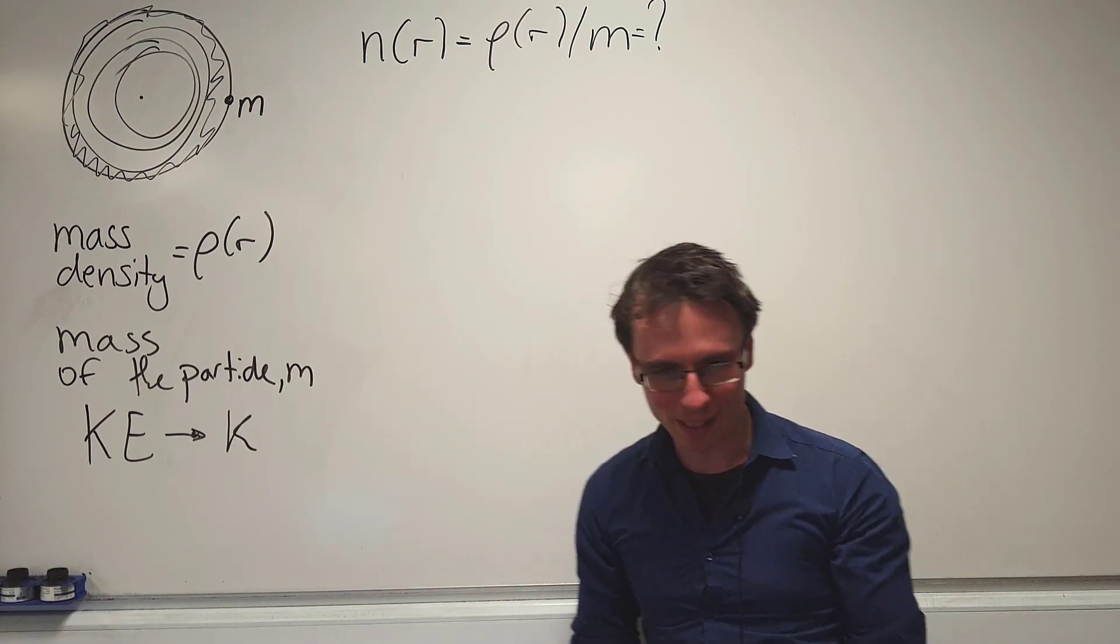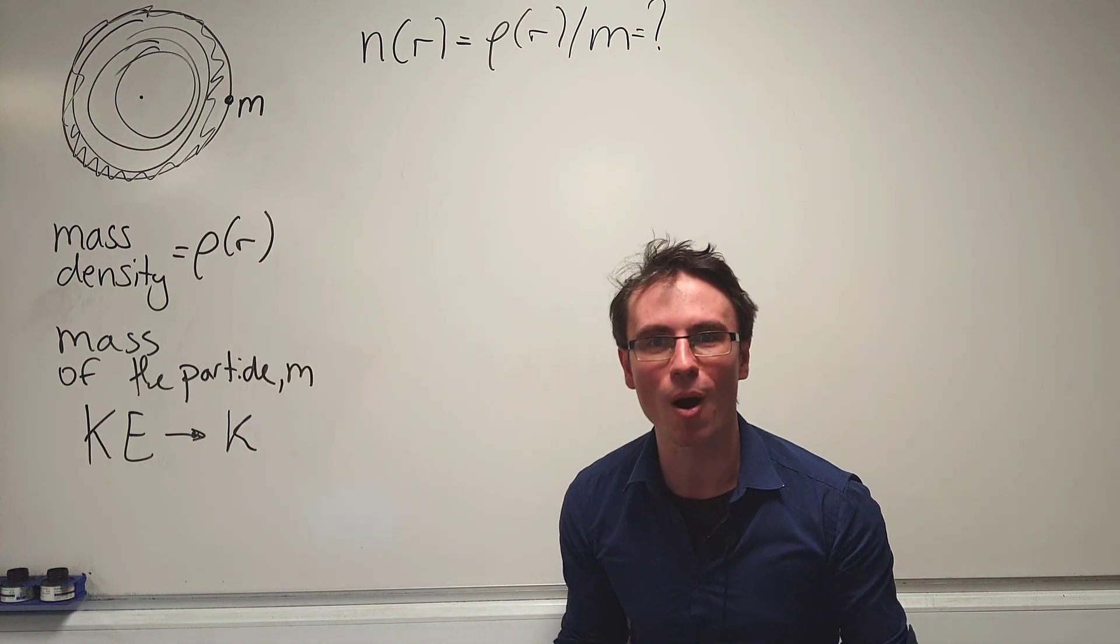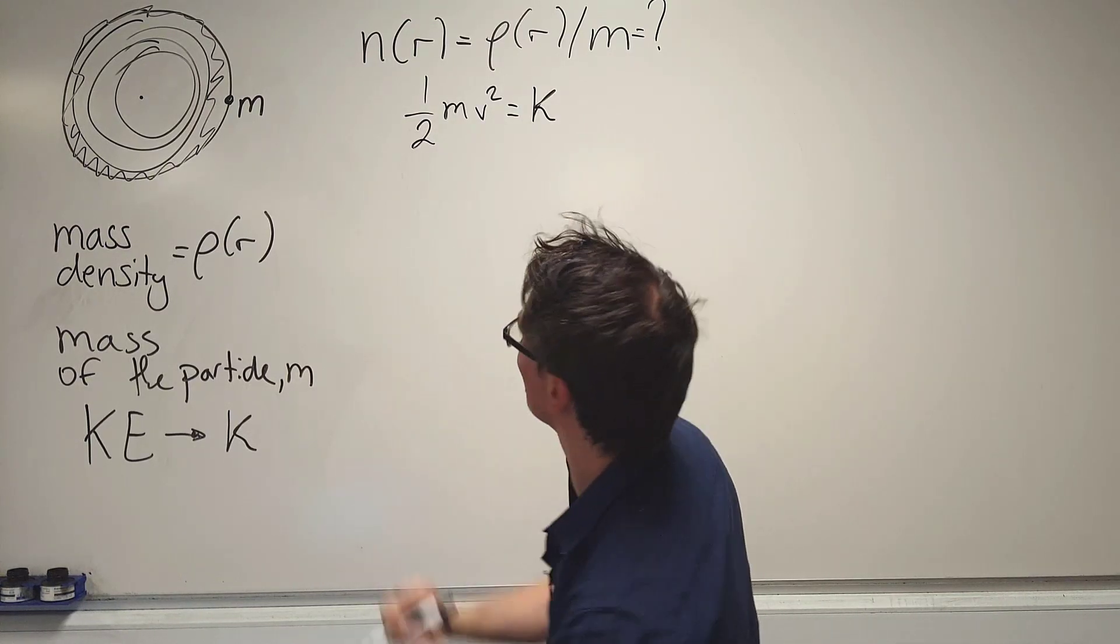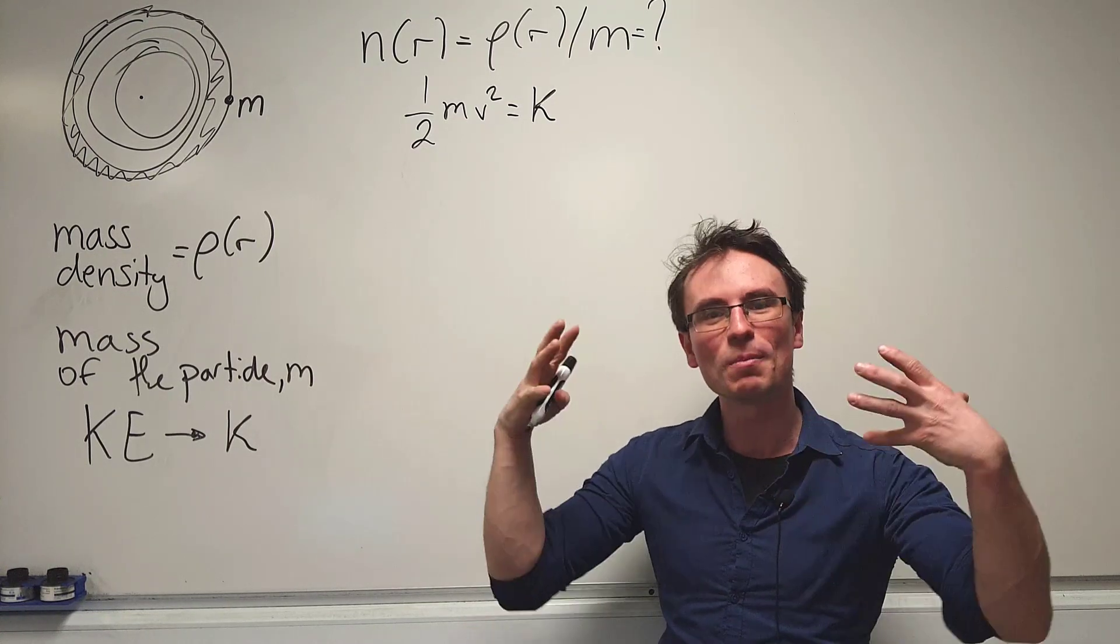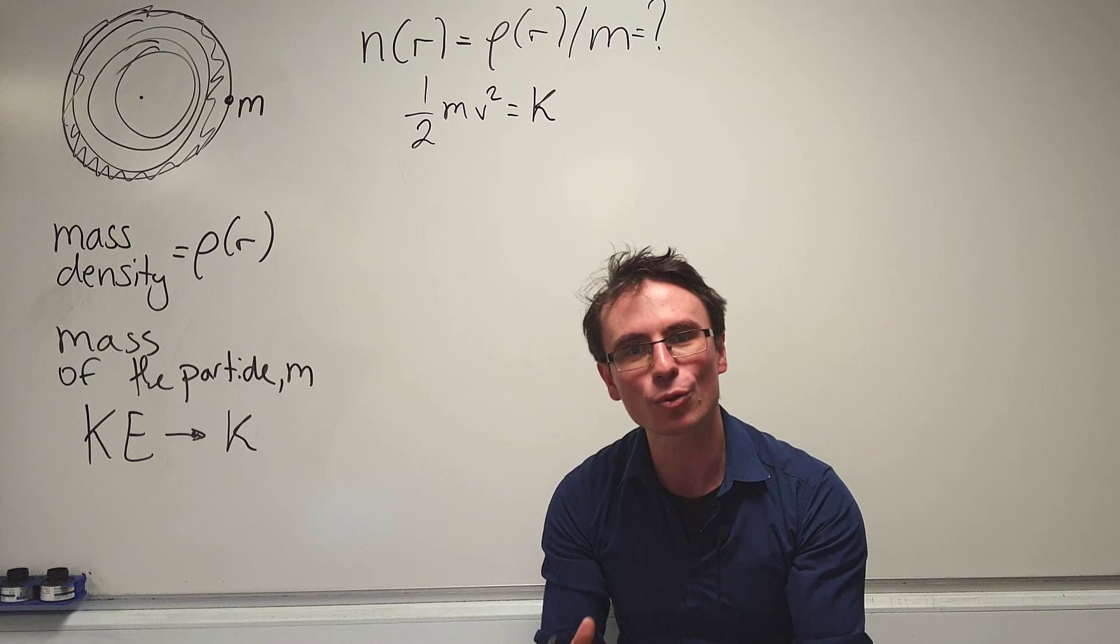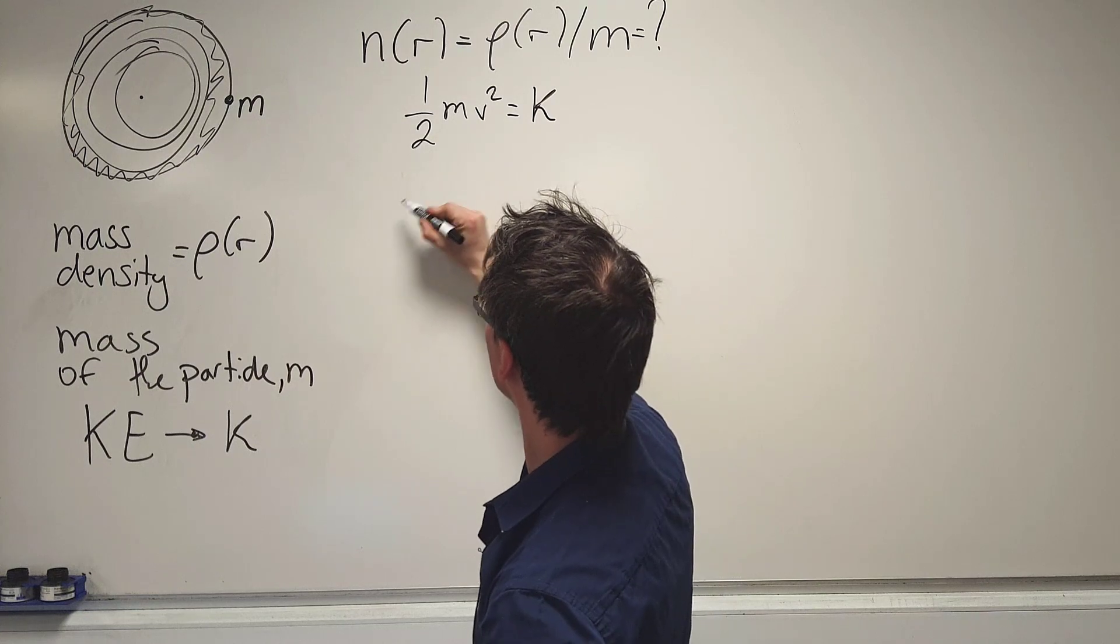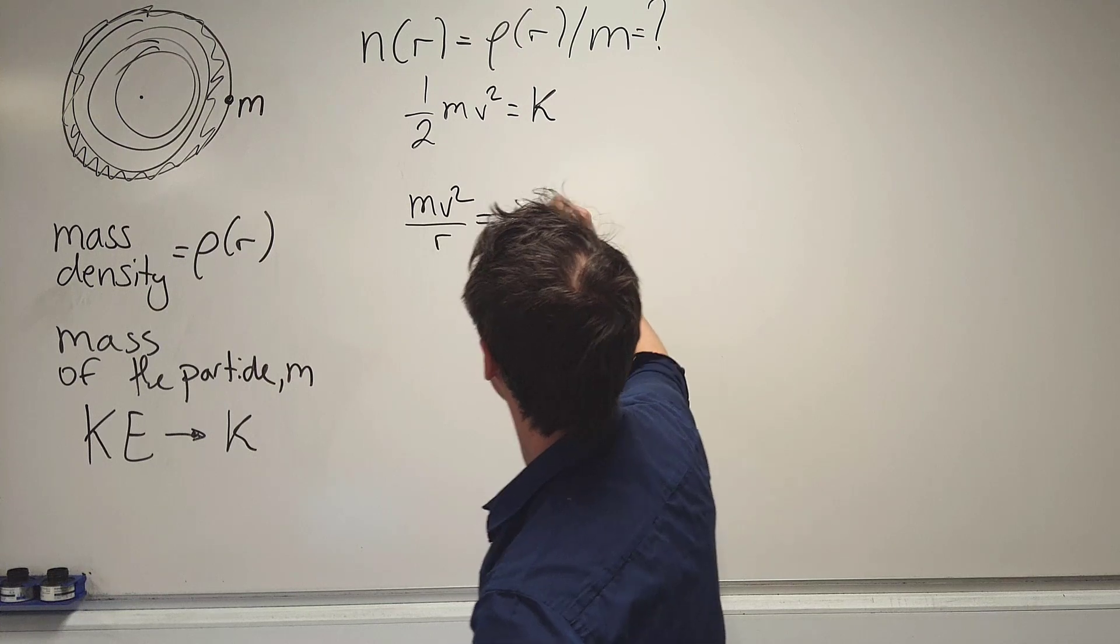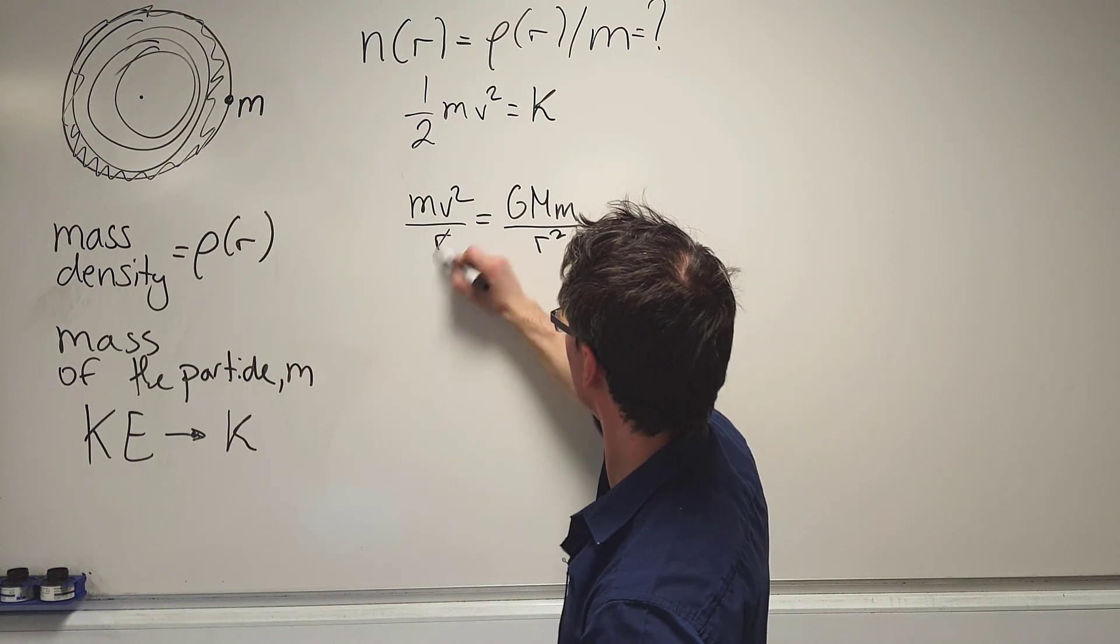The best place to start with this question is just writing down what we already know. We know that the kinetic energy of a single particle is k. Therefore, a half mv squared is equal to k. Now, we also know that the particles in this gas are moving under gravitational attraction. Because of that, the net centripetal force will actually be equal to the gravitational force. So we can say that mv squared over r will be equal to gmm over r squared. We can actually cancel out this.